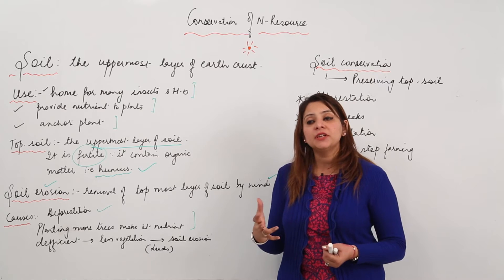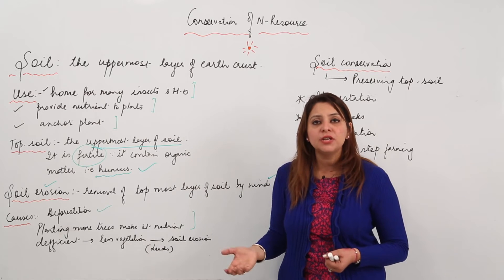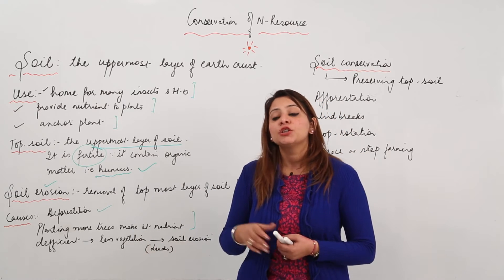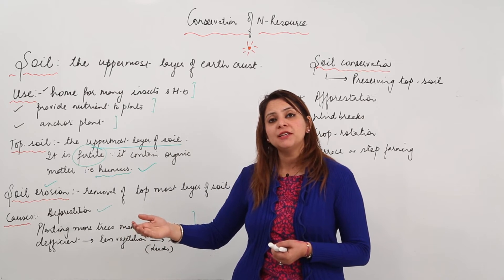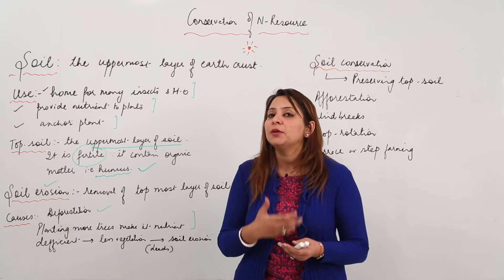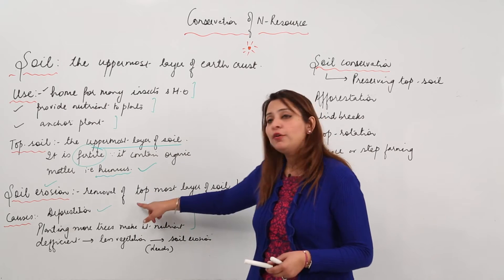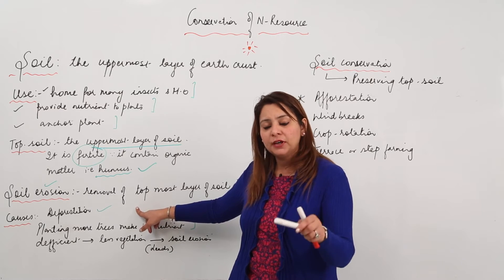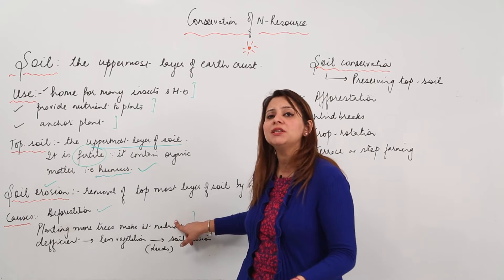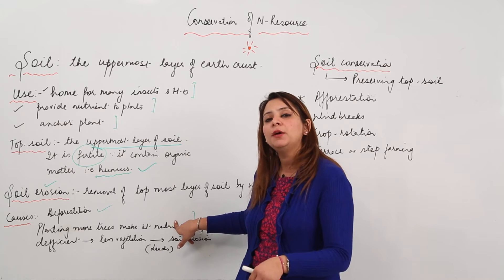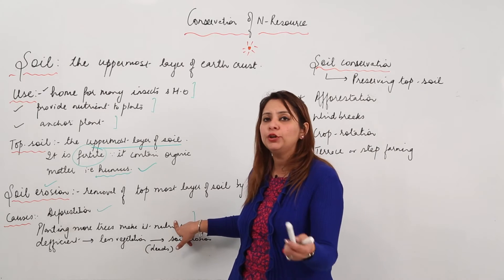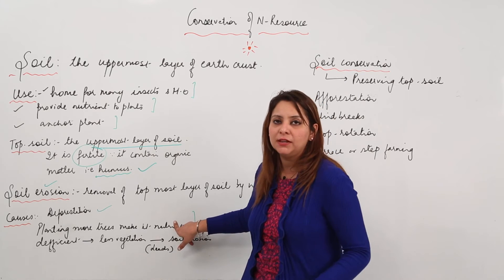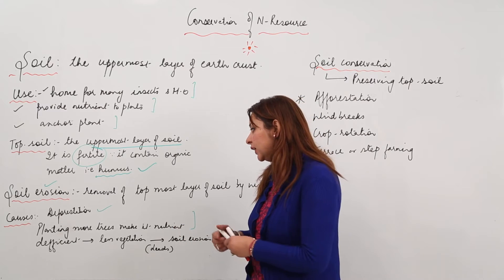Another factor is over-use of soil. If we keep on using the same soil again and again, the time will come when it becomes deficient in nutrients. When it becomes deficient in nutrients, you won't use that soil for plant growth, so the soil will be left loose and can easily be carried away by wind or water. Excess plantation is also a major reason — when soil becomes infertile, plants won't hold it firmly and it can be taken away.